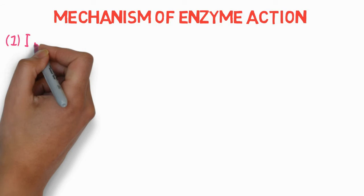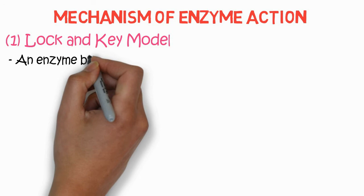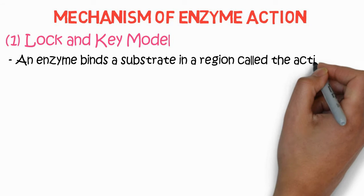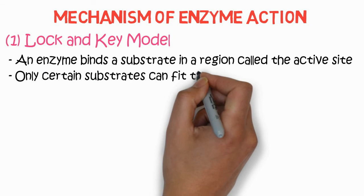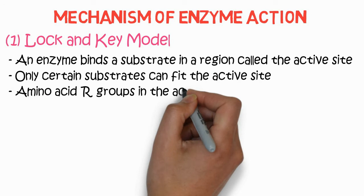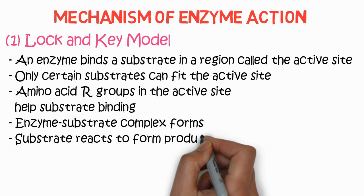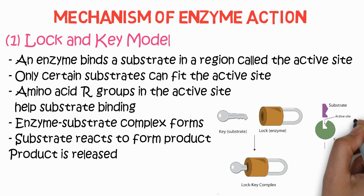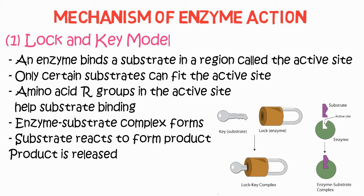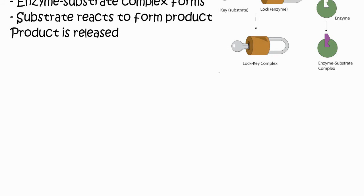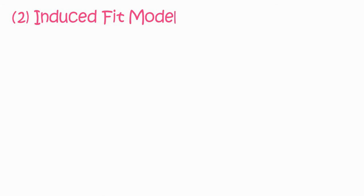Regarding the mechanism of enzyme action, there are two important model systems. The first is the lock-and-key model: the enzyme binds to a substrate at the region called the active site. Only certain substrates can fit the enzyme's active site. Amino acid groups in the active site help in substrate binding, an enzyme-substrate complex forms, substrates react to form products, and products are released. This is analogous to a key fitting only a specific lock — the substrate is specific to that particular enzyme.